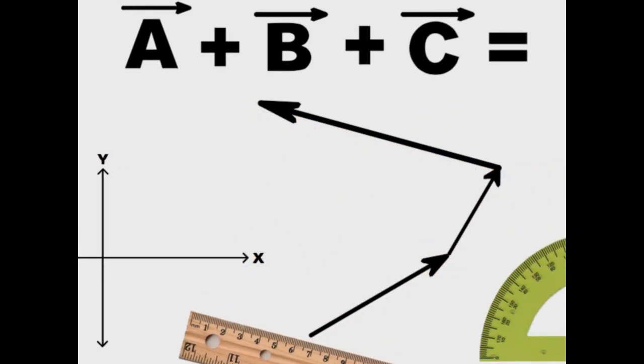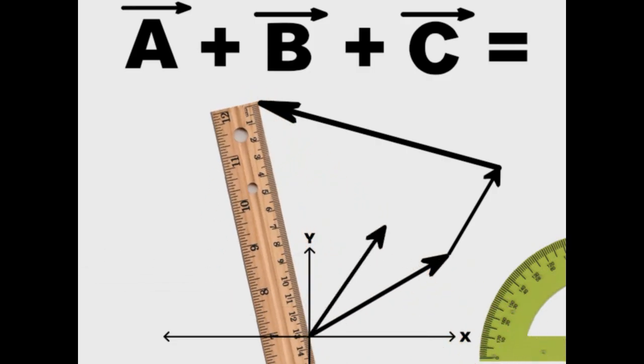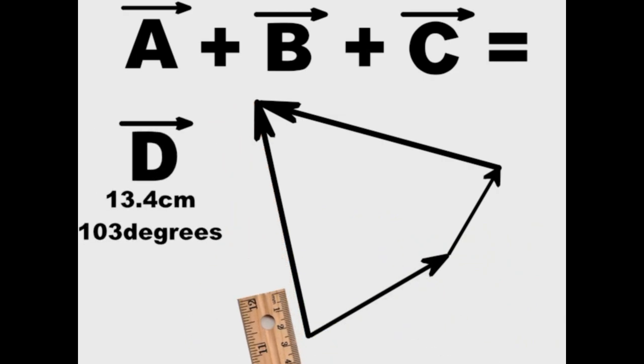Step 5: We draw a vector from the very first point to the tip of the last vector. We draw an arrowhead. This is the resulting vector when all of the other vectors are added.